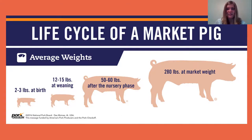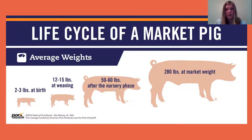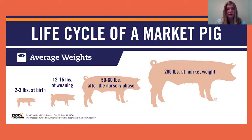Now pigs — sometimes in the movies we'll see pigs eating slop or garbage, but that's not true at all. Pigs are actually fed a special diet of ground-up corn and soybean meal mixed with vitamins and minerals to help them grow nice and big and strong. When pigs are born, they usually weigh two to three pounds, and then over about a six-month period they're going to grow. When they reach 280 pounds, that's when they're at market weight — that's when they're going to be sold off and processed into all the meats that we like.